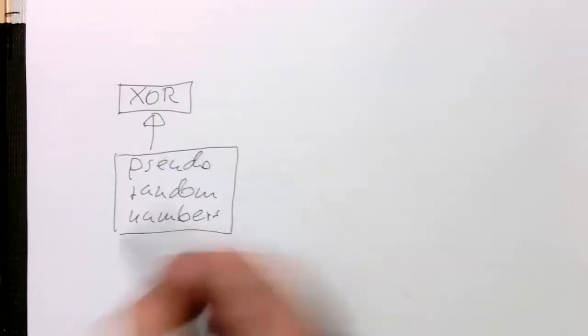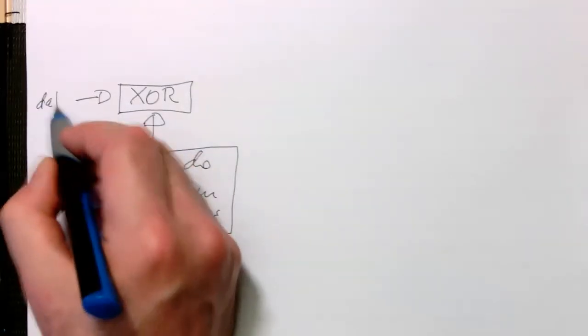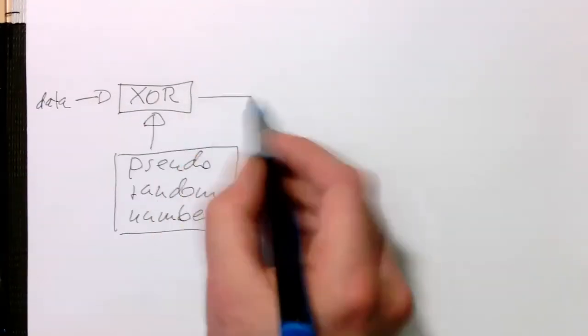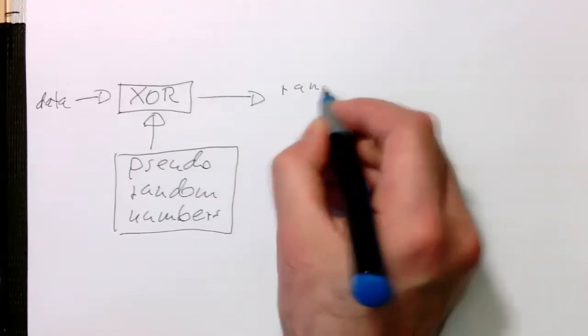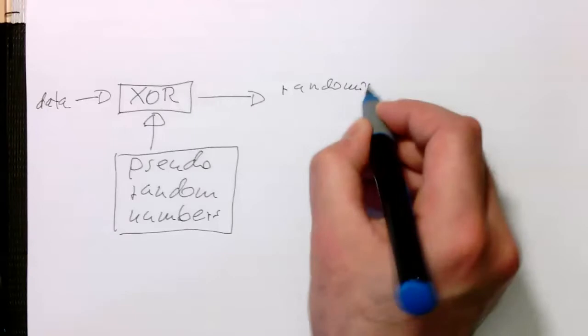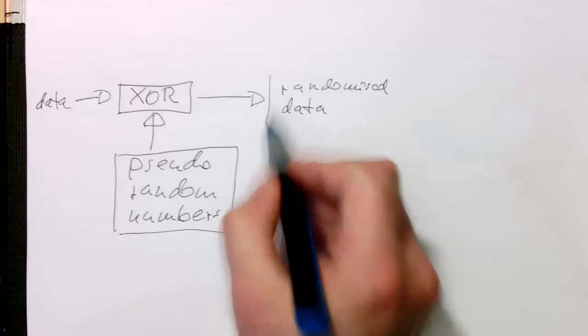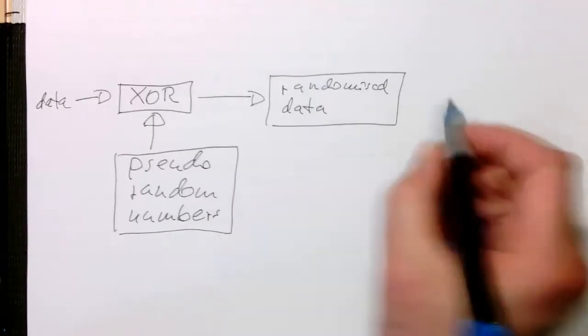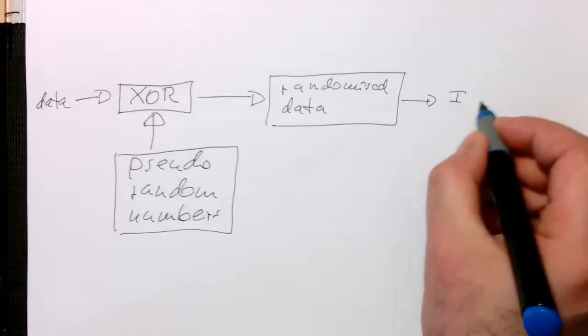So if we do that, having our data, and that's our randomized data, then this goes here into our inverse Fourier transform.